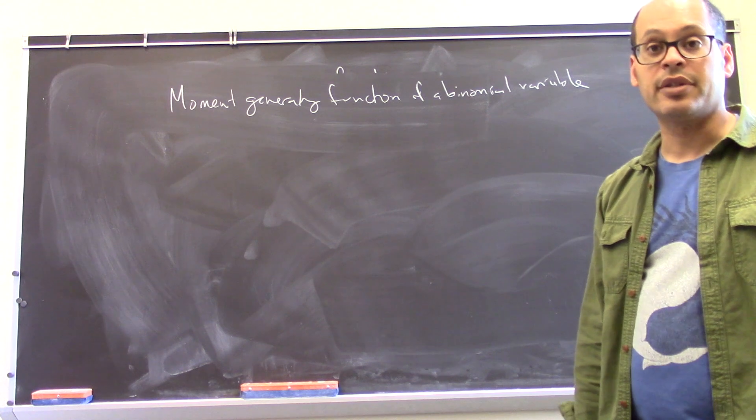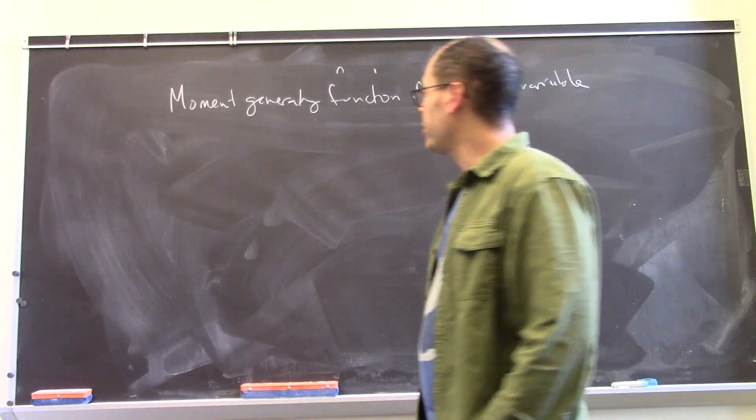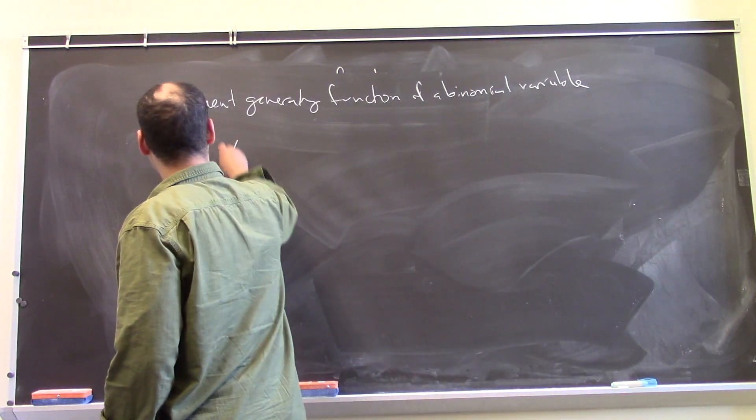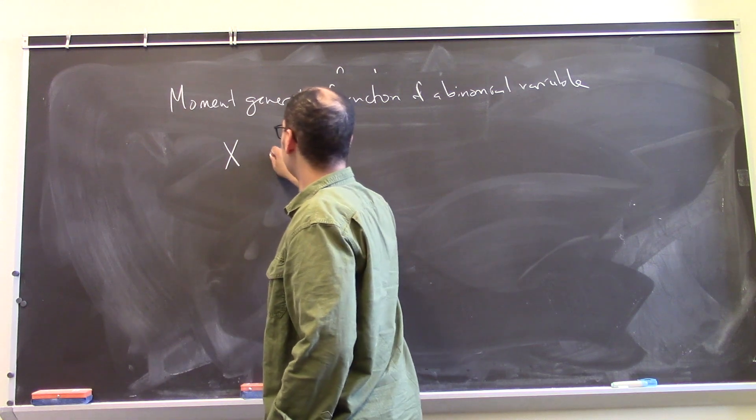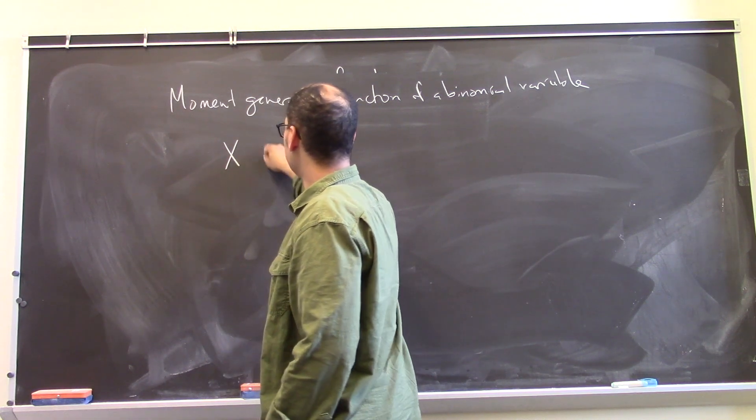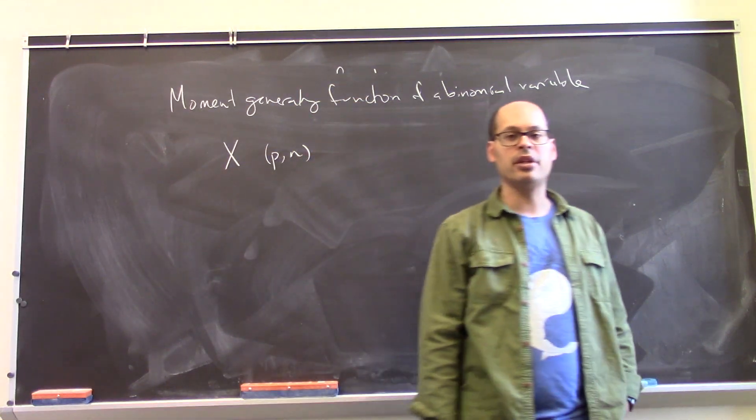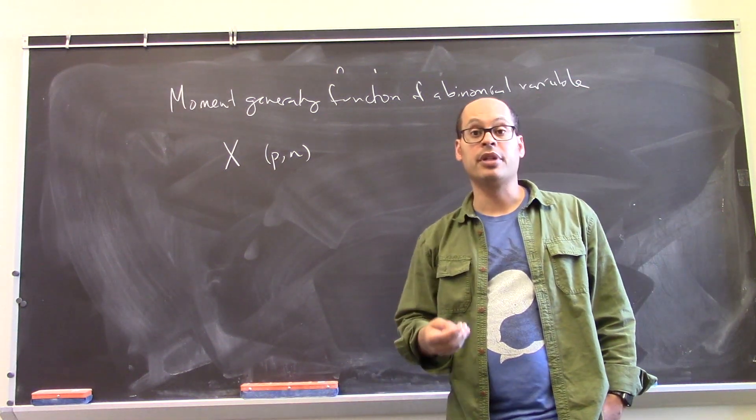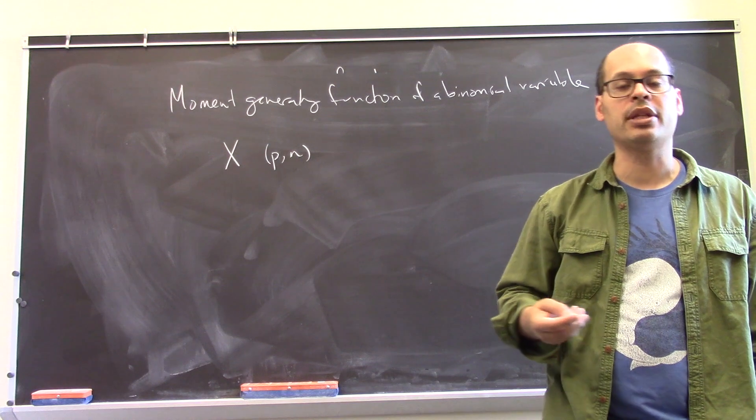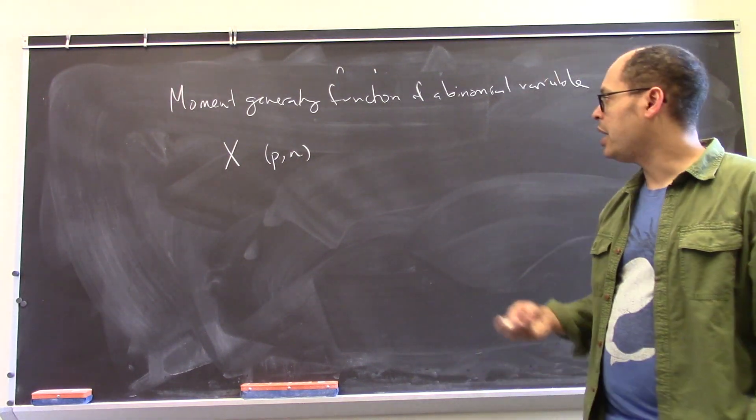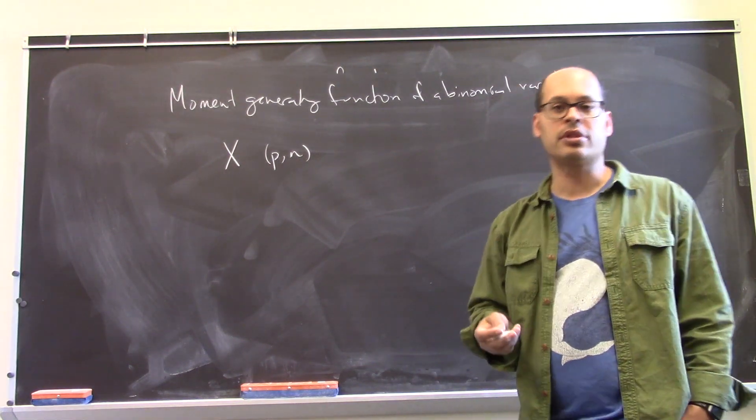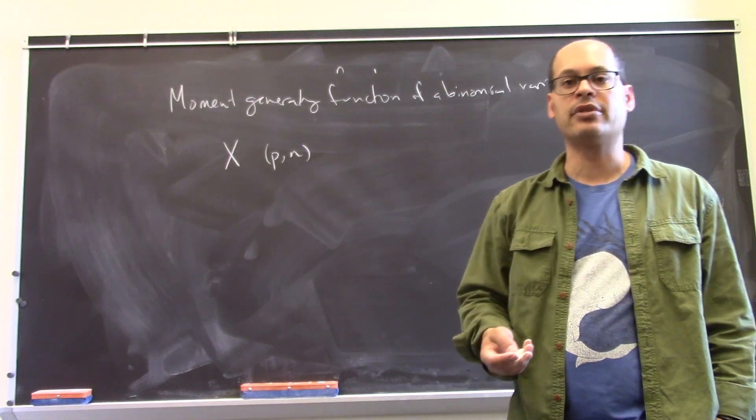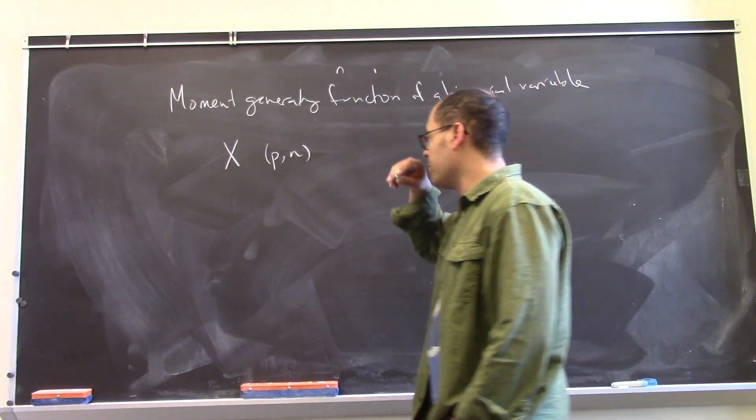Let's take a look at the moment generating function of a binomial random variable. So suppose X is a binomial variable with parameters p and n. So that is to say, we imagine that we have some experiment with probability p of success. We repeat that experiment n times, and X denotes the number of successes we have after those trials. That's the binomial random variable.